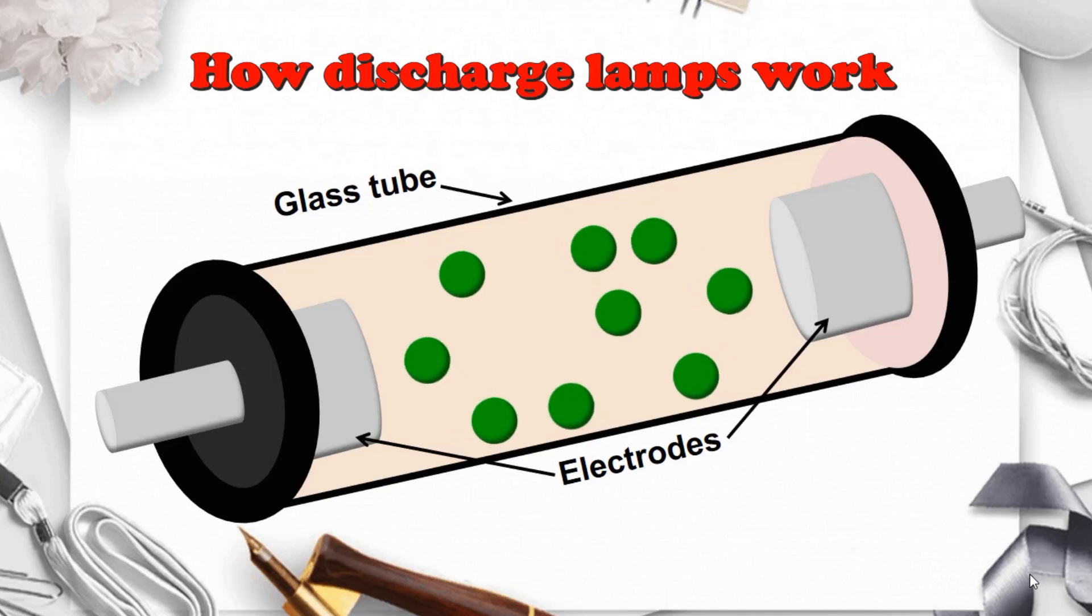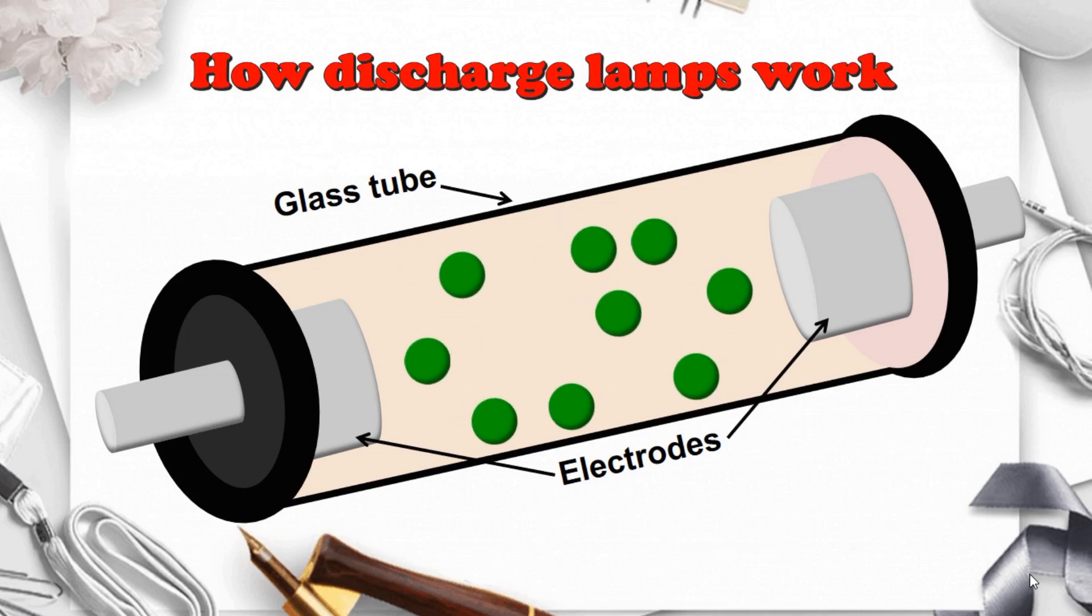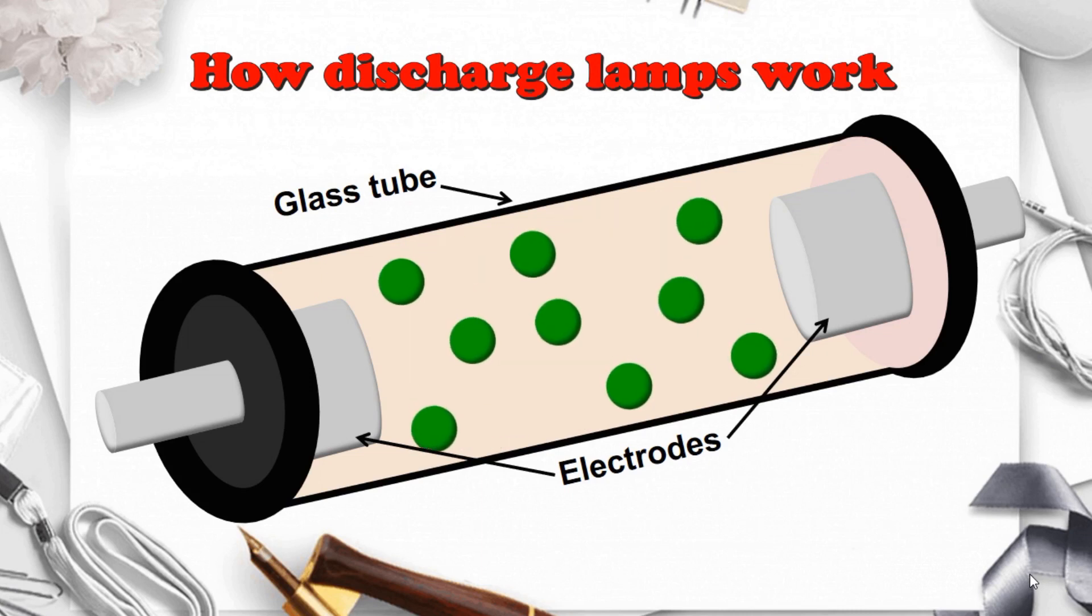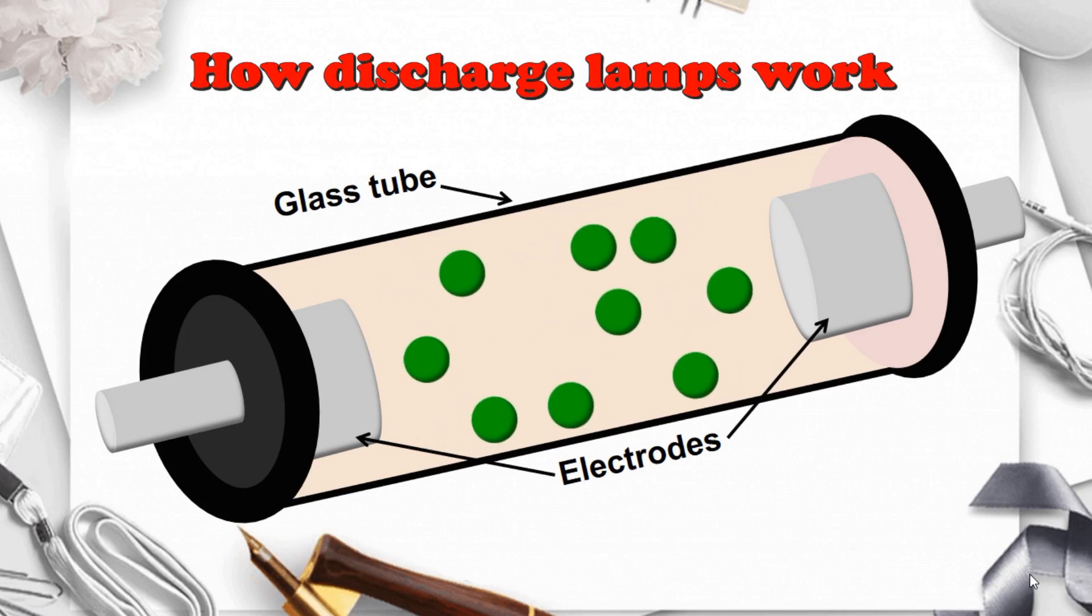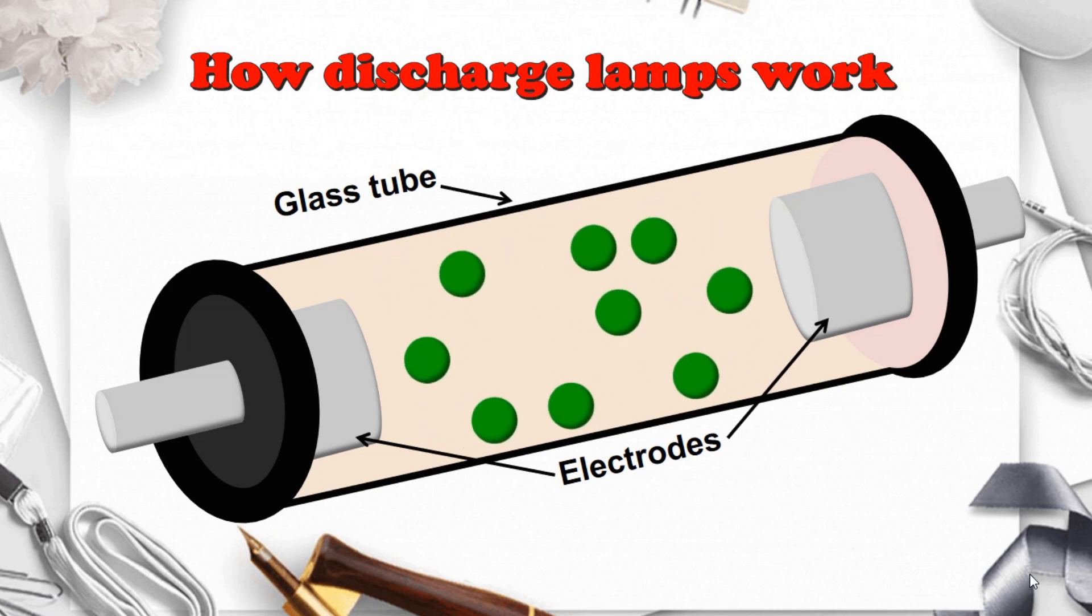The neon lamp is a type of gas discharge lamp. When an electric voltage is applied to the electrodes, enough energy is supplied to remove an outer electron from the neon atoms. If there is not enough voltage, there will not be enough kinetic energy for the electrons to escape their atoms, and nothing will happen.